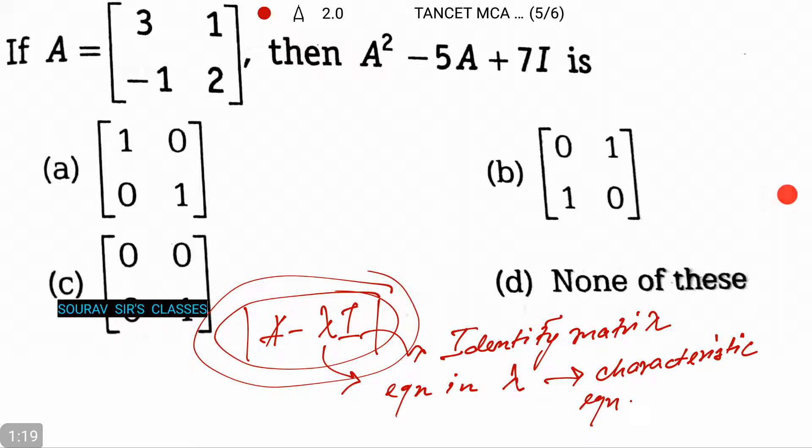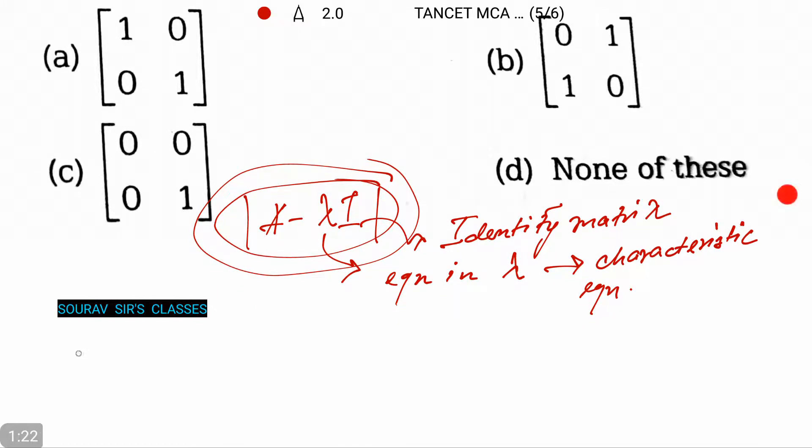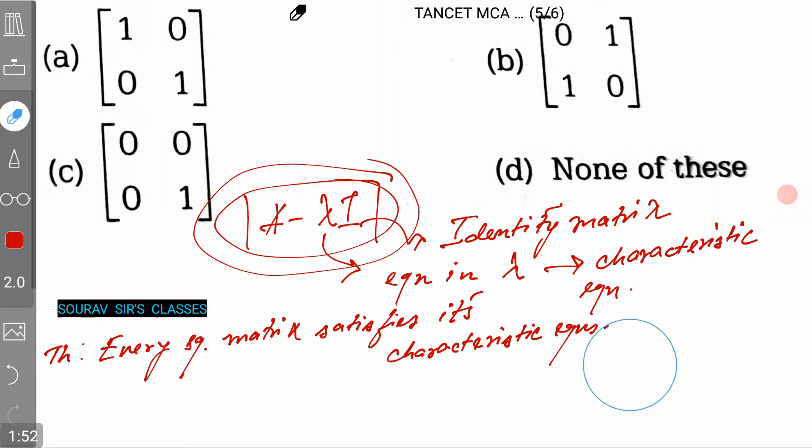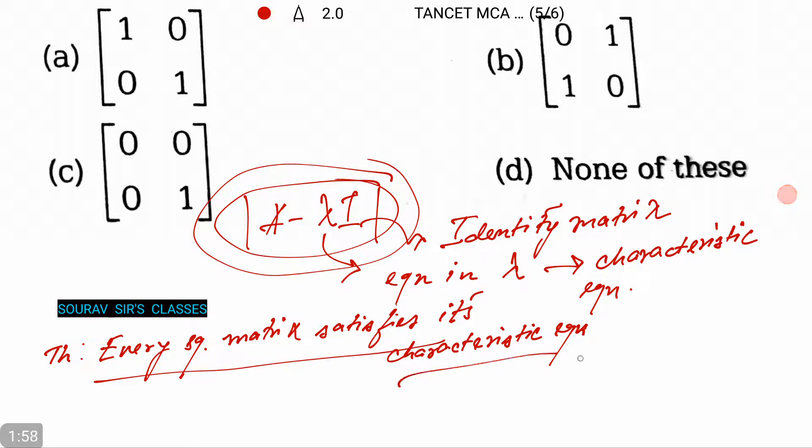In theory, the theorem states that every square matrix satisfies its characteristic equation. Since every square matrix will need one for each, OK.